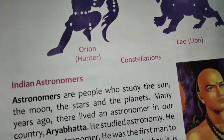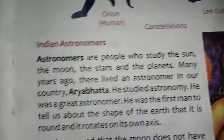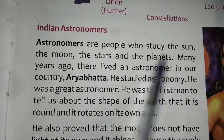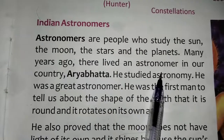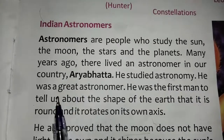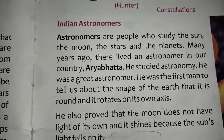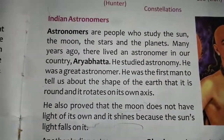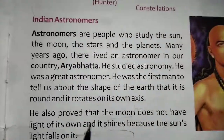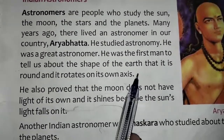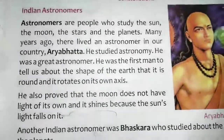Now, Indian astronomers. Astronomers are people who study the sun, the moon, the stars, and the planets. Many years ago, a great astronomer in our country was Aryabhata. He was the first man to tell us about the shape of the earth — that it is round and rotates on its own axis.